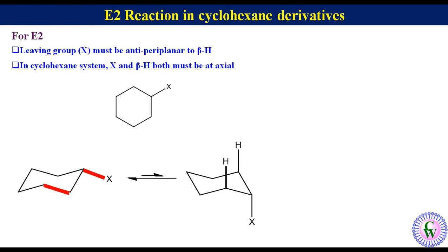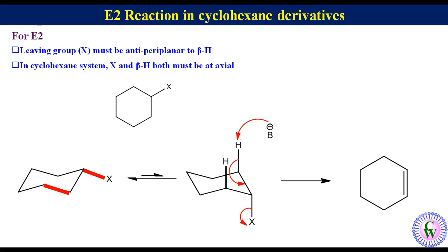Here, X is anti-periplanar to the beta hydrogen. In the presence of a base, this conformation undergoes E2 elimination to produce cyclohexene. As the E2 reaction proceeds, to maintain the equilibrium, the conformation with equatorial X is continuously converted to the conformation with axial X. This process continues until all the substrate is converted to alkene.